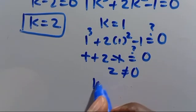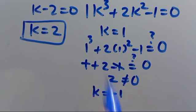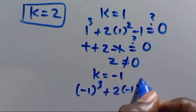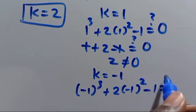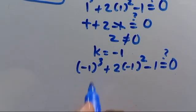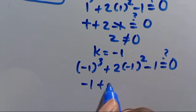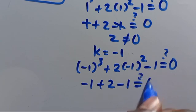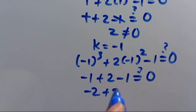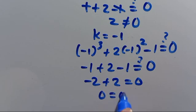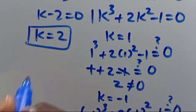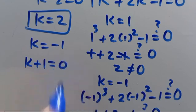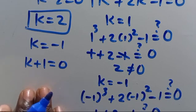Let's try k = -1: (-1)³ + 2(-1)² - 1 = -1 + 2 - 1 = 0. This equals 0, so k = -1 is verified. Therefore the second solution is k = -1, which is the same as k + 1 = 0.